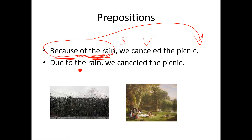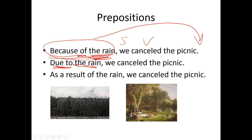Here's another sentence. Due to the rain, we canceled the picnic. In this situation, 'the rain' is a noun, and it's the object of the preposition 'due to.' As a result of the rain, we canceled the picnic. 'As a result of' is the preposition, and 'the rain' is the object of the preposition.